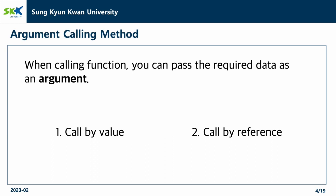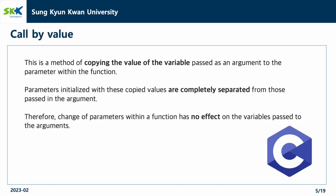When calling a function, you can pass the required data as an argument, and there are two ways to pass the data: call by value and call by reference. Call by value is a method of copying the value of the variable passed as an argument to the parameter within the function. Parameters initialized with these copied values are completely separated from those passed in the argument. Therefore, a change of parameters within a function has no effect on the variables passed to the argument.